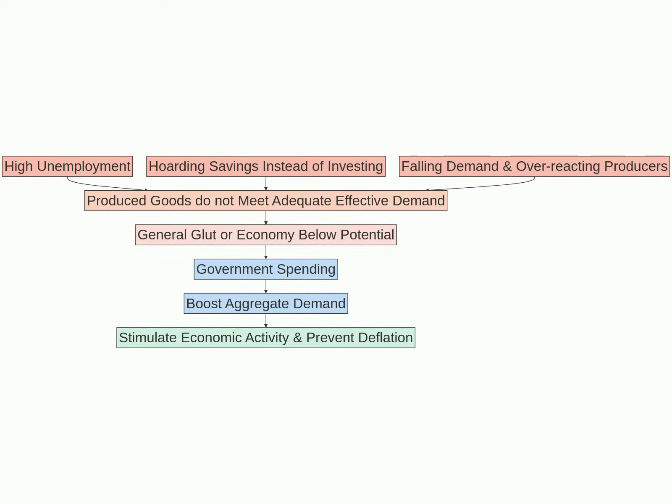The Keynesian economic theory proposes that during economic downturns, goods produced do not meet with effective demand, leading to high unemployment. This situation can be exacerbated when individuals and firms hoard savings instead of investing, and when producers overreact, leading to a drop in demand. This sequence can result in a general glut,